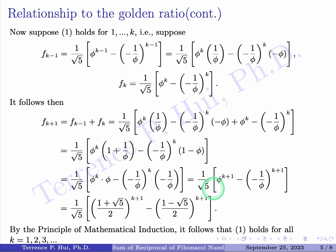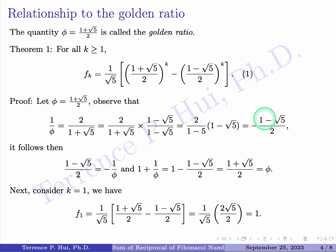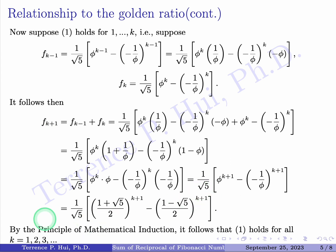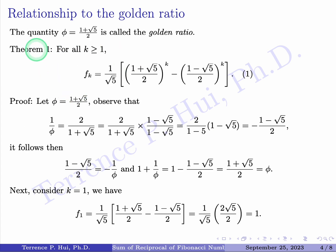At this point we are done. We have shown that assuming the expression holds up to k implies it also holds for k+1. You can rewrite in full form by substituting φ = (1+√5)/2 and −1/φ = (1−√5)/2. Therefore, by the principle of mathematical induction, expression 1 holds for all k ≥ 1. Theorem 1 is proved.